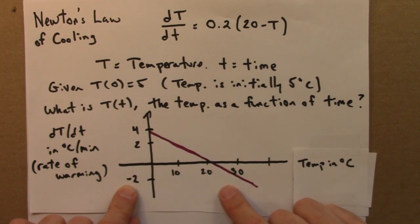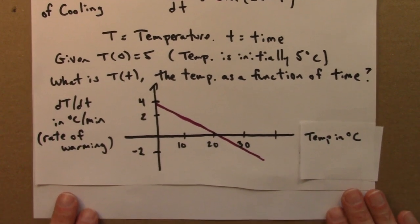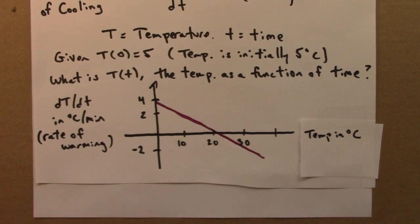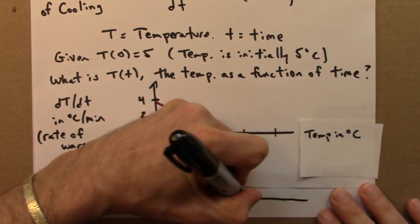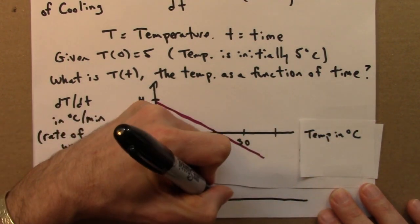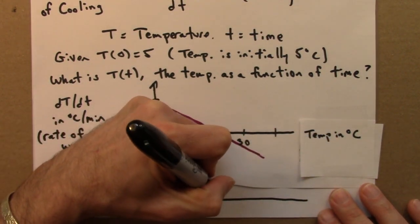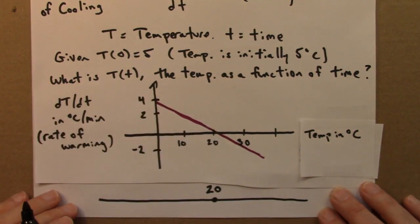So, from this type of graph, we can go immediately to a phase line for the solutions for this differential equation. So, let me draw that. There's one fixed point, or equilibrium value, and that's at 20.